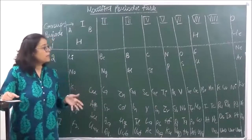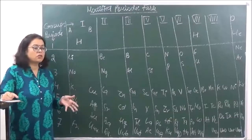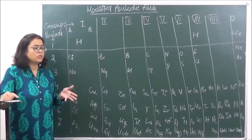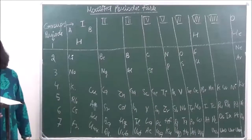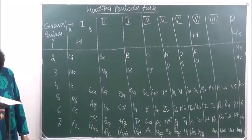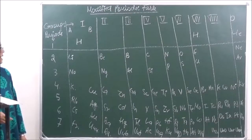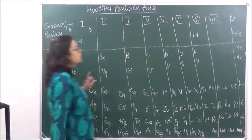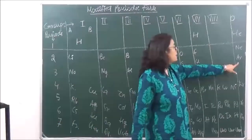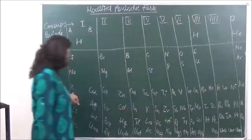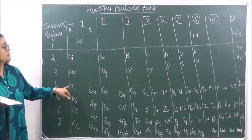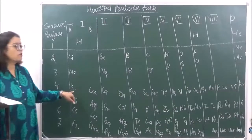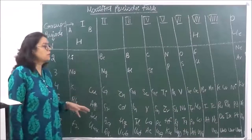When atomic number was taken as the function, the atomic number of argon is 18 and the atomic number of potassium is 19. So you can see in the periodic table, argon is placed before potassium. This rectification was achieved when the modern periodic table was introduced.